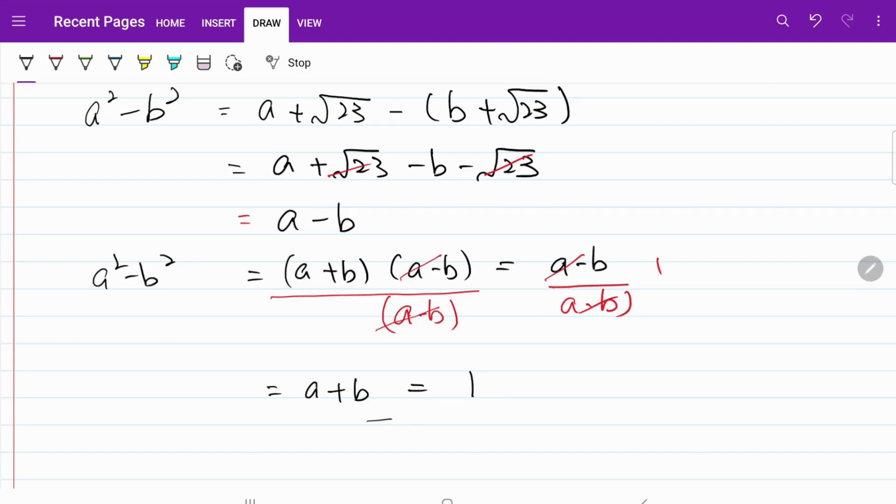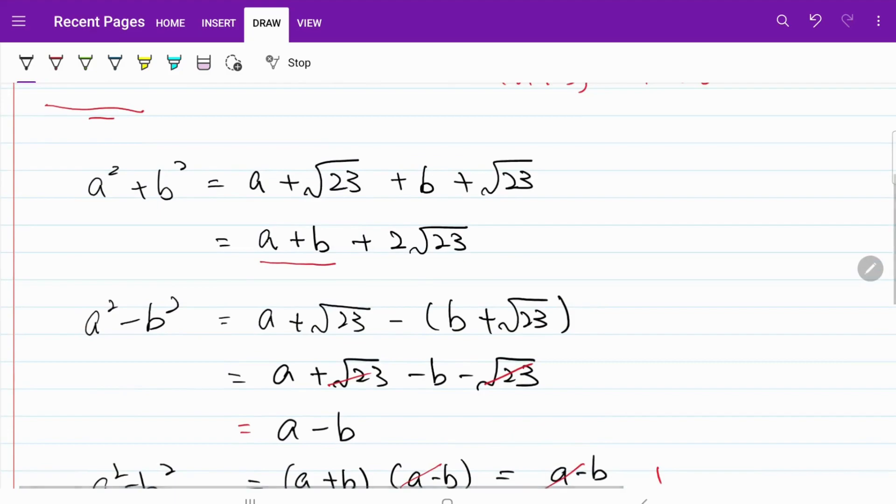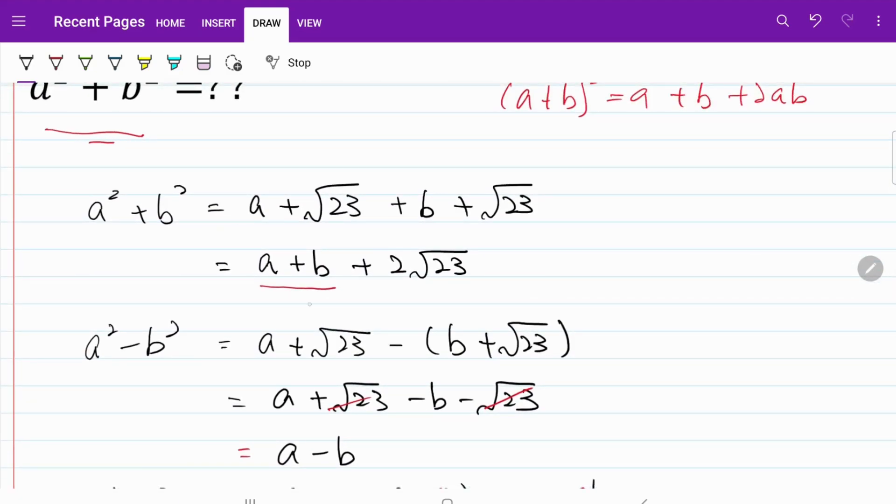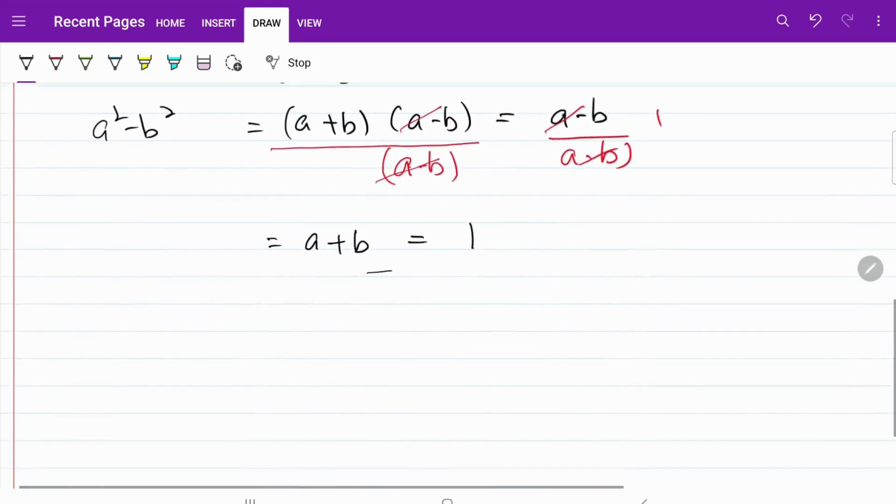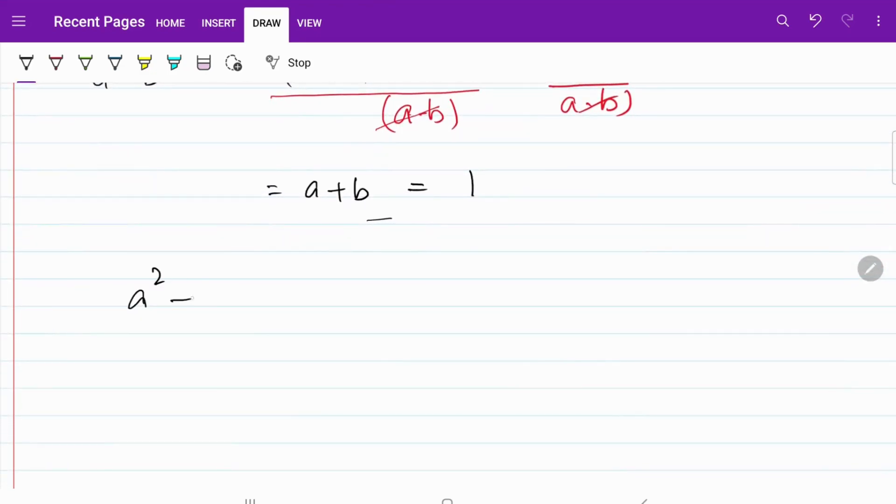Now, I can go ahead and substitute this value back into our original equation of a + b = 1, meaning a² + b² = 1 + 2√23.